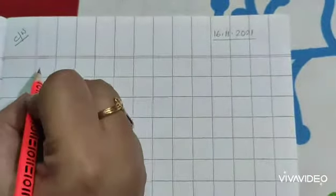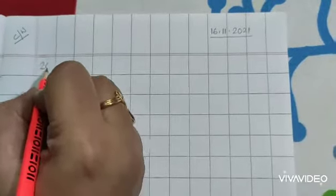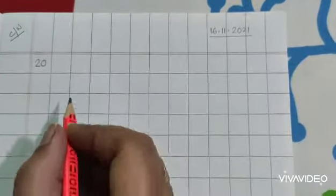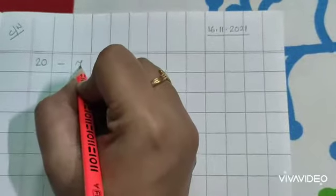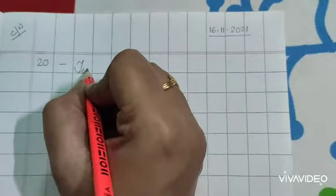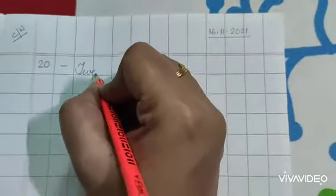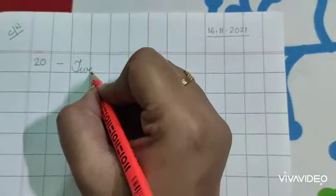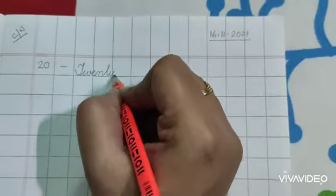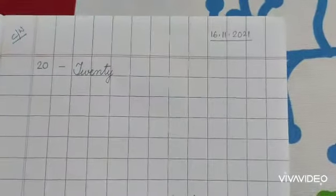So, here only you will write the number name 20, 20, 20. Spelling is T, W, E, N, T, Y, 20, okay?